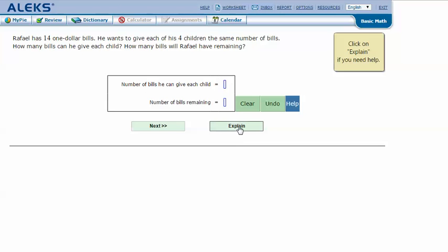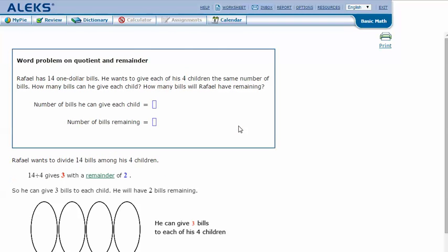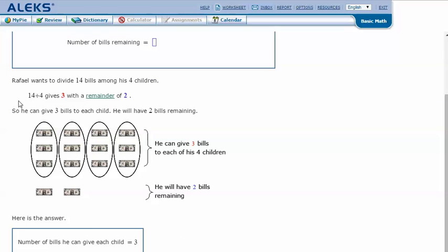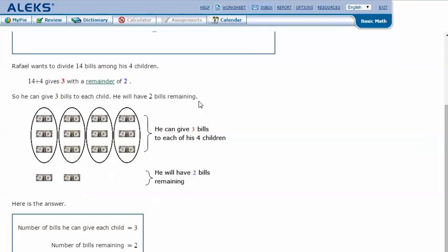Let's click explain. Raphael wants to divide 14 bills among his four children. 14 divided by 4. The closest number that we get without going over is 3 with a remainder of 2. 3 times 4 is 12. 14 minus 12 is 2. So he can give 3 bills to each child and have 2 dollars left over.